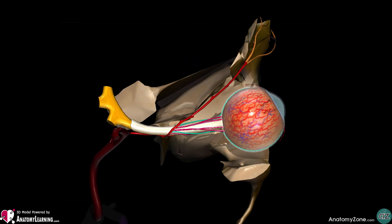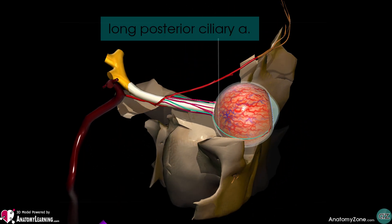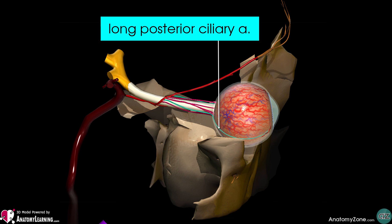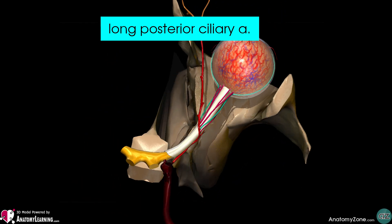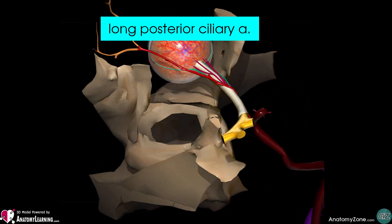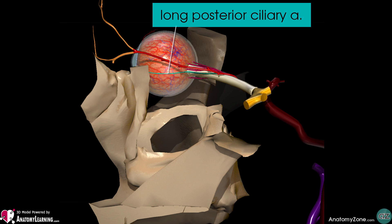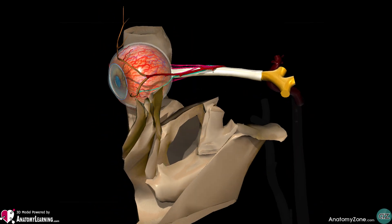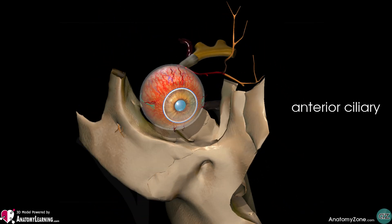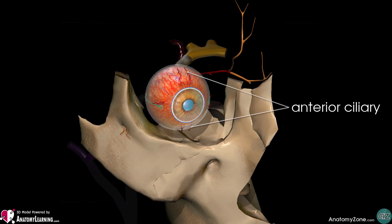The long posterior ciliary arteries run a longer course medially and laterally around the sides of the optic nerve and pass to the anterior aspect of the eyeball, piercing the choroid layer. You also have the anterior ciliary arteries, and within the choroid layer they anastomose with the long posterior ciliary arteries.